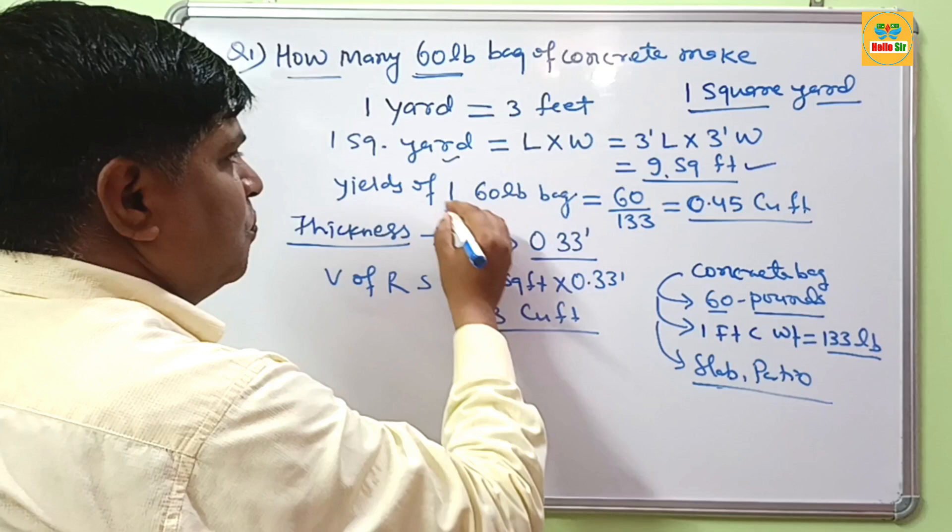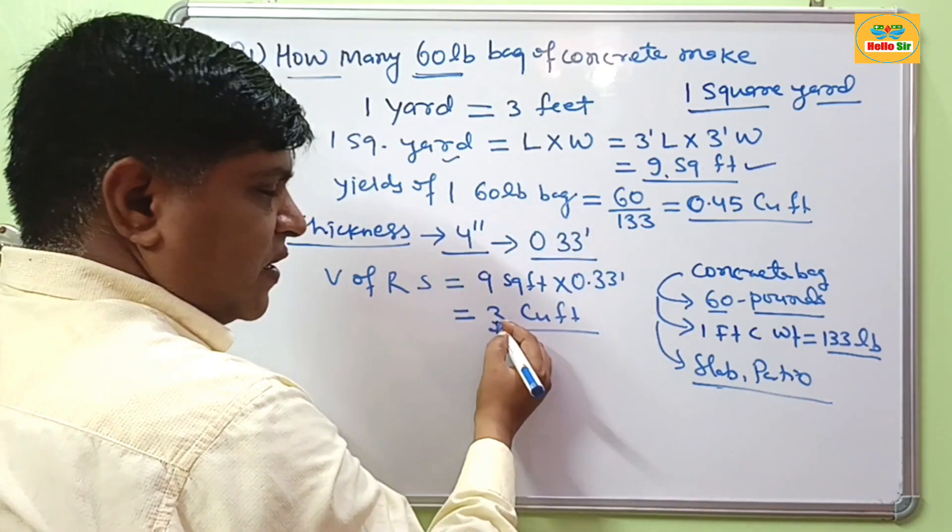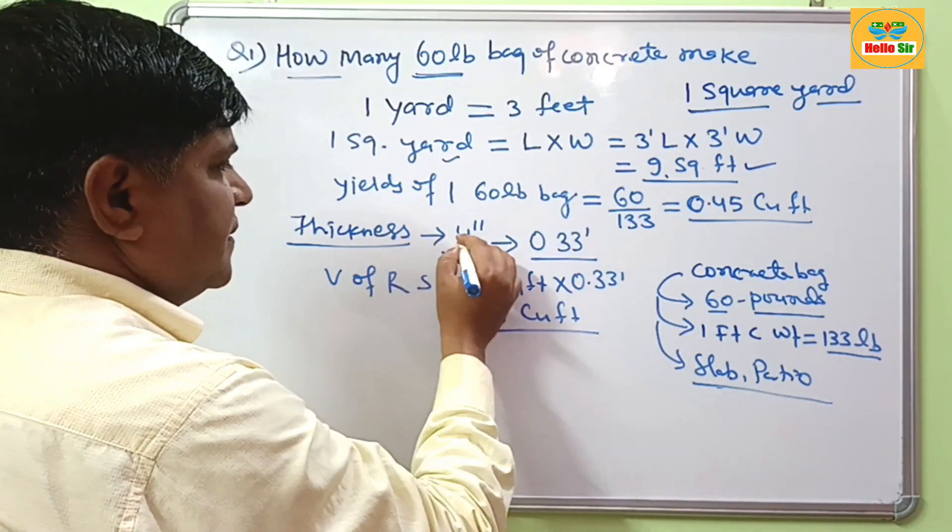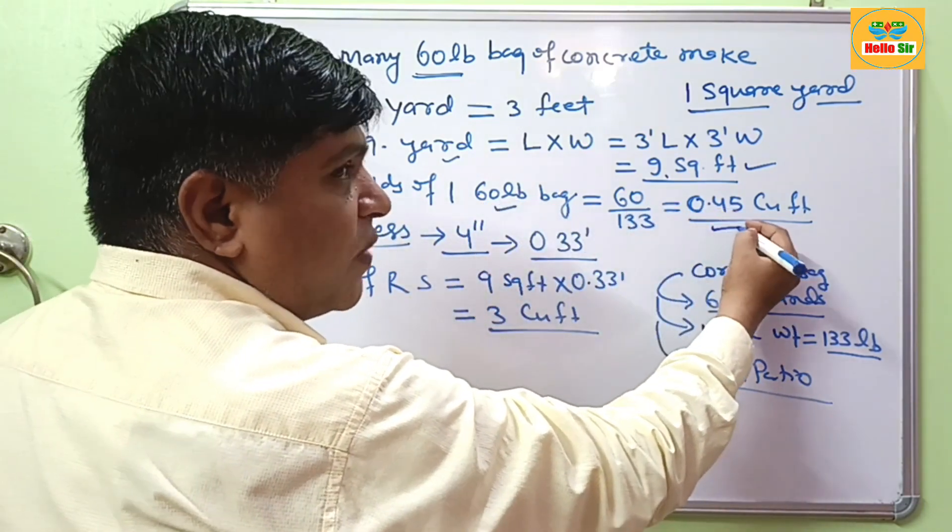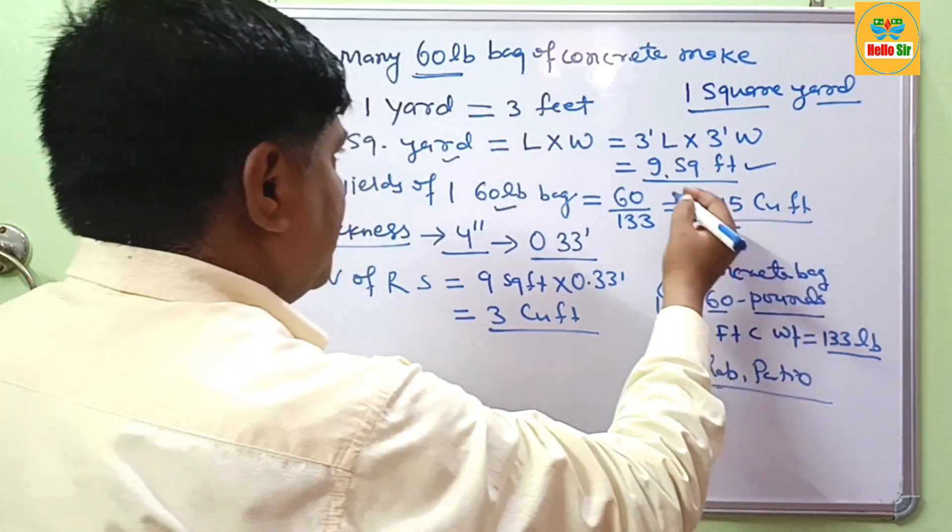And what is the volume of your concrete structure? This will come about 3 cubic feet at the thickness of 4 inches. And volume of 1 bag of 60-pound concrete is 0.45 cubic feet.